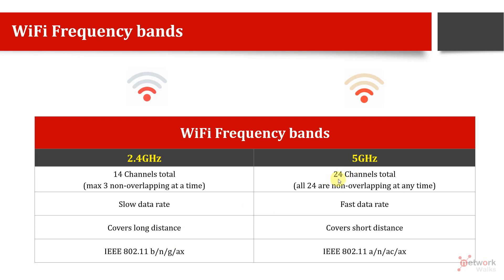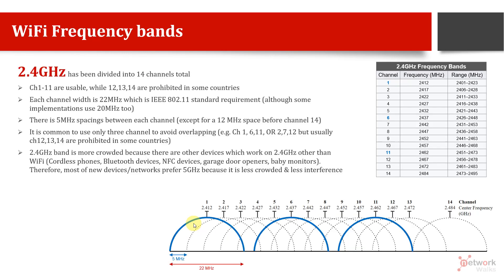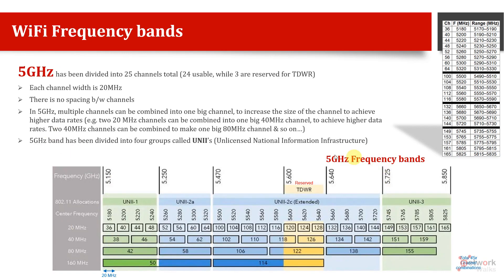The most interesting fact about 5 GHz is that it gives us 24 channels, and all 24 are non-overlapping. It does not have the overlapping problem seen in 2.4 GHz. This is because 2.4 GHz has only 0.1 GHz of total bandwidth, while 5 GHz has a full 1 GHz of bandwidth. The 5 GHz chart looks complex at first glance, but it's straightforward with some physics background.